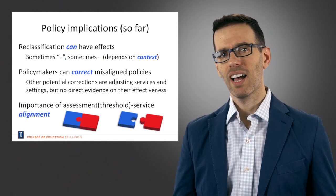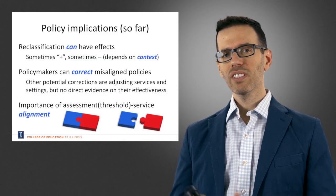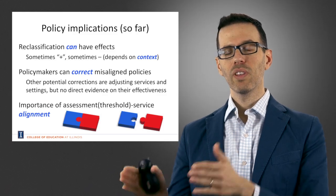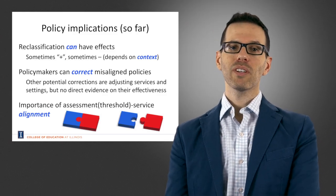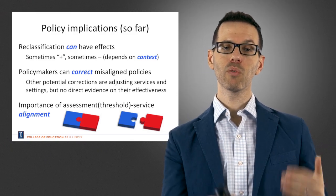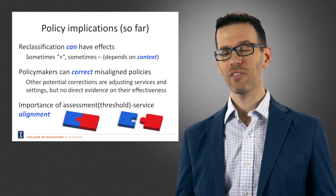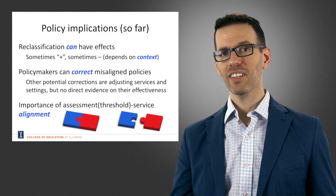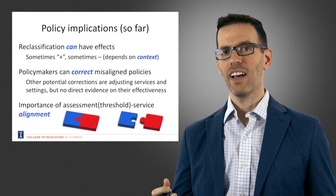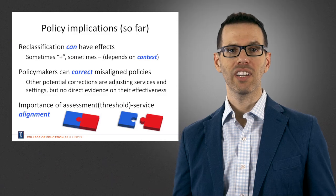The second point that I want to highlight here is that policymakers can correct misaligned policies. So what we saw with this paper that I just was talking about in LAUSD is that when there was a negative effect with a low threshold, the threshold was made to be higher and we saw that there was a removal of the negative effect. So this suggests that policymakers have not only a lot of influence in where they set the criteria on the likelihood of reclassification, but they also have a lot of influence on or a lot of potential to remove negative effects or readjust criteria as needed.